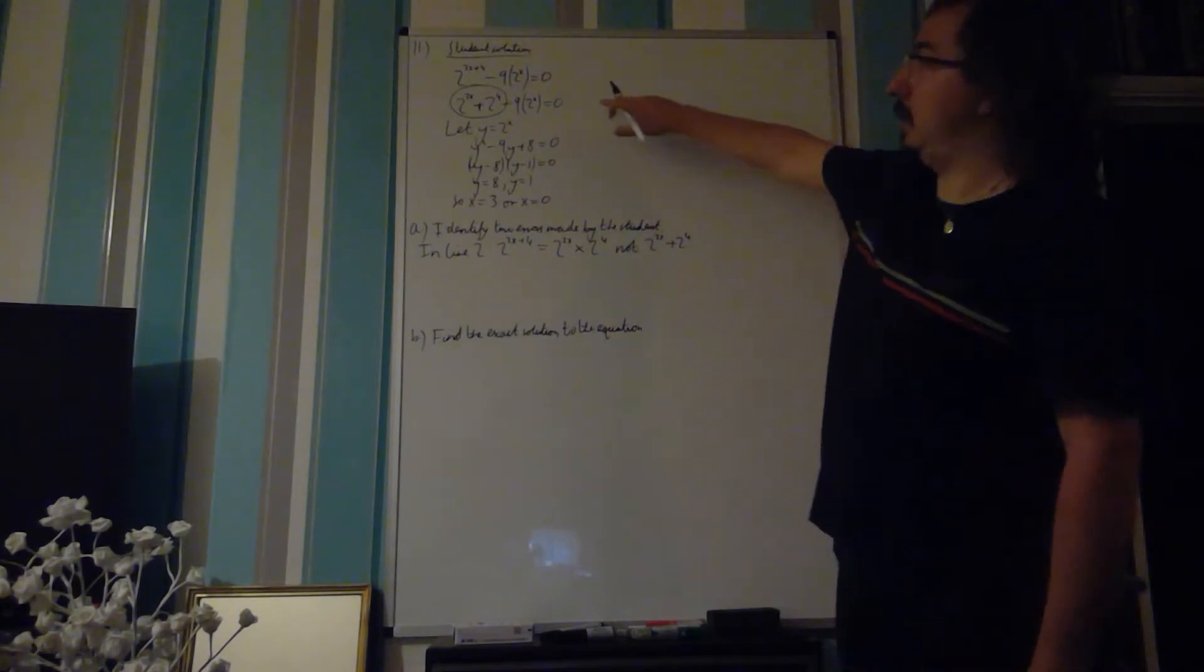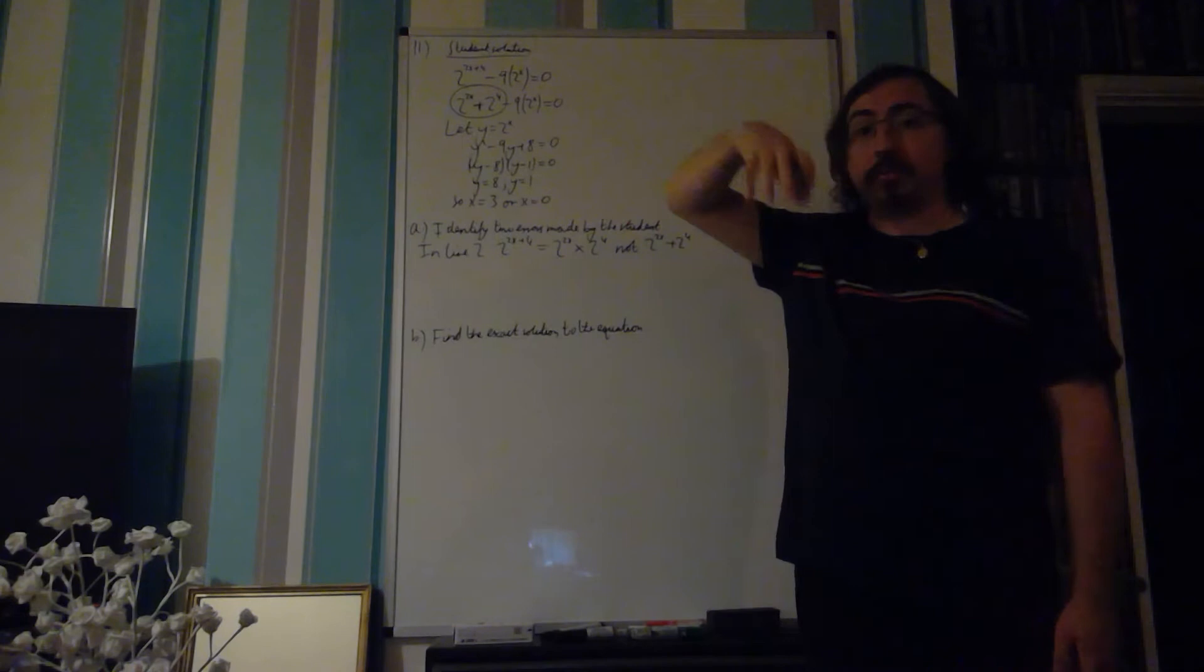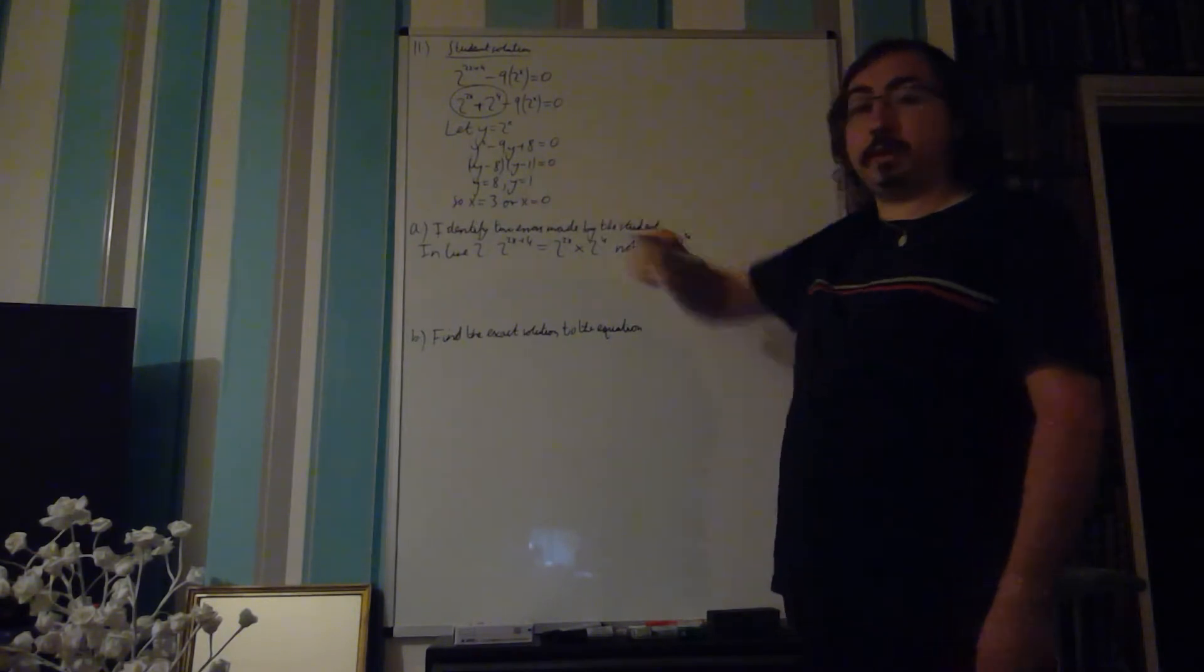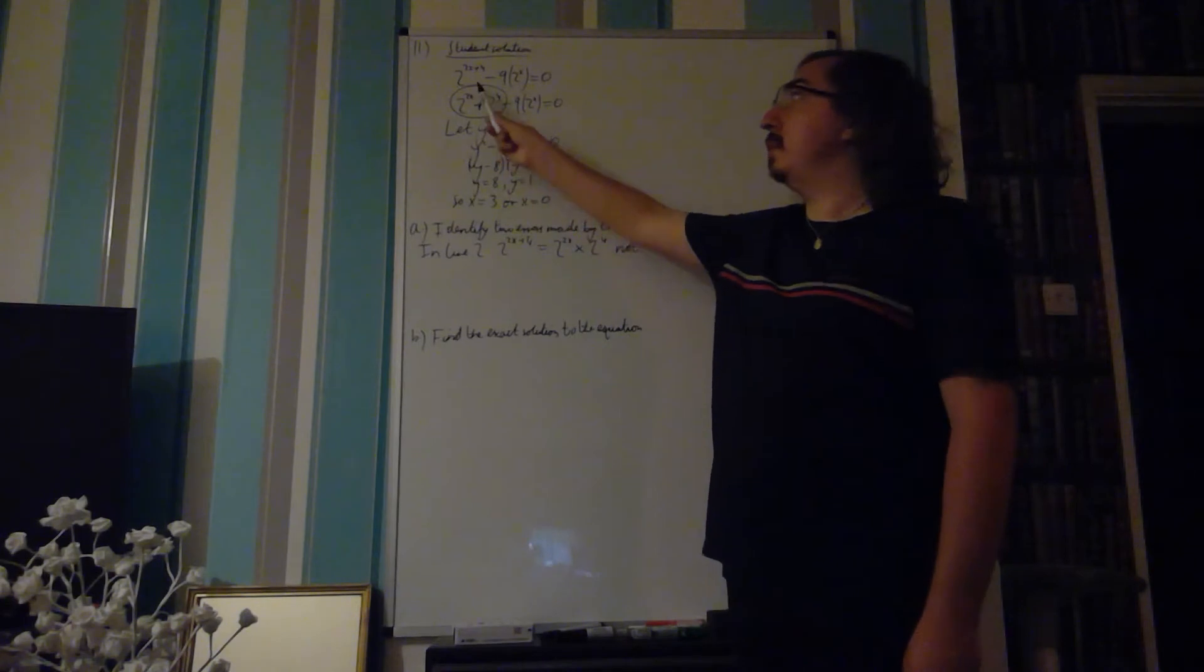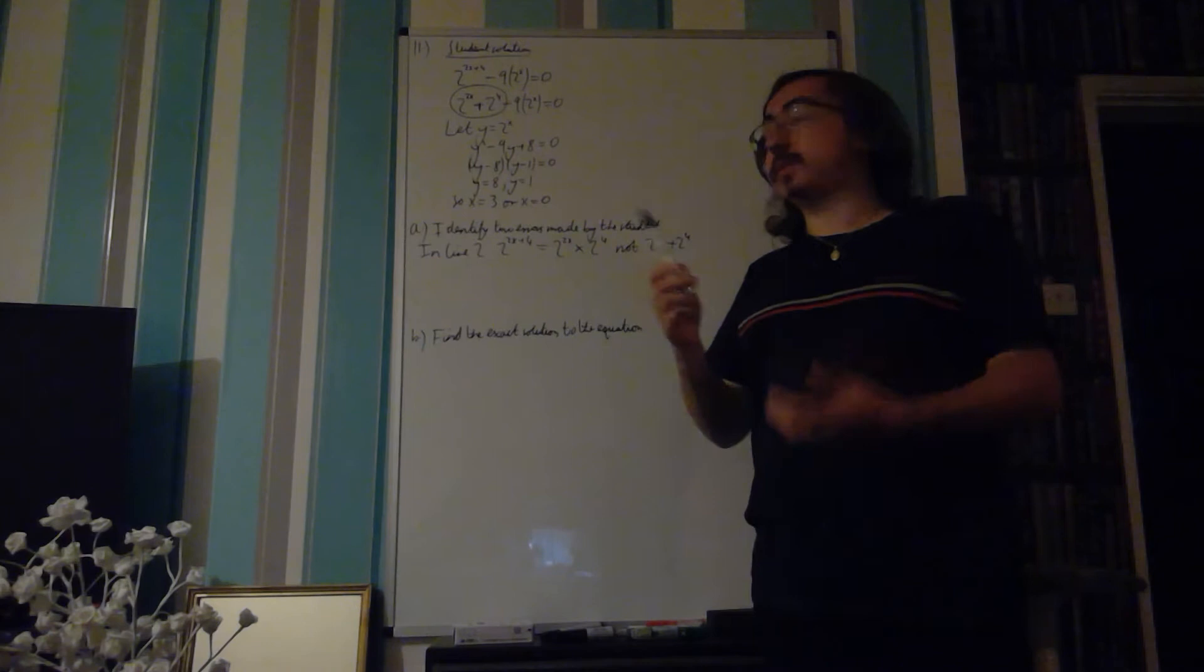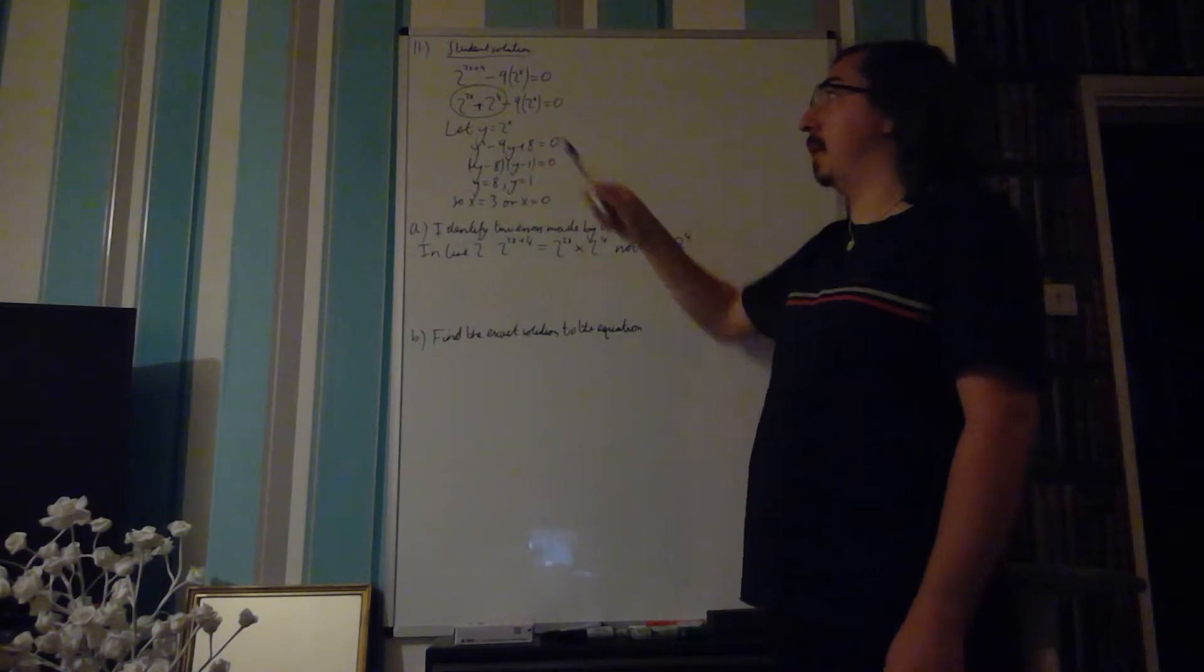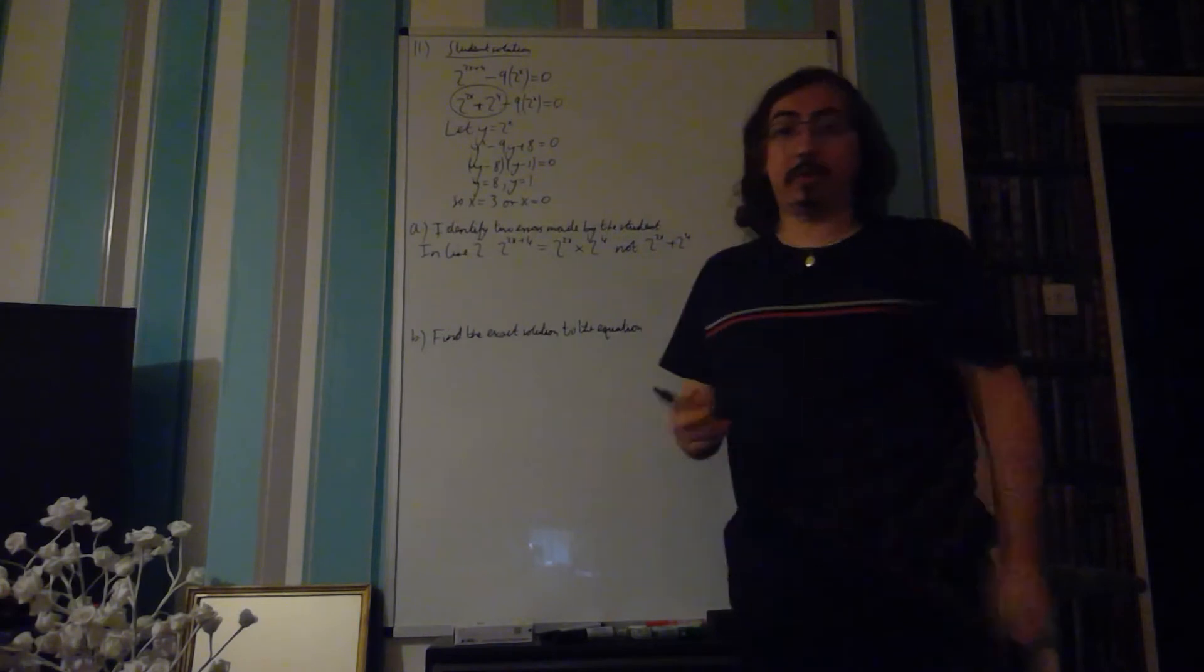The second mistake is, fine, he said let y equal 2 to the x, that's sensible, makes it slightly easier to see what's happening. And he's formed the quadratic which would be correct. However, the y squared, yes, this is the 2 to the 2x, 2 to the x is y, that's the power of 2. So y squared minus 9 times 2 to the x is the minus 9y. But he's got plus 2 to the power of 4, but he's got plus 8.